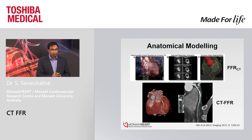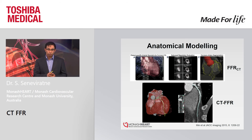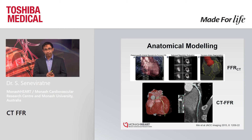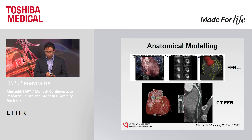With HeartFlow FFR-CT, it's a very time-consuming process requiring sub-voxel analysis; the entire coronary tree is mapped with significant human input. With the Toshiba CT-FFR technique, the three major vessels are analyzed extending up to a distal diameter of 1.8 millimeters. It also requires adjustment of the center line, which is the rate-limiting step, but is significantly less time-consuming compared to FFR-CT.